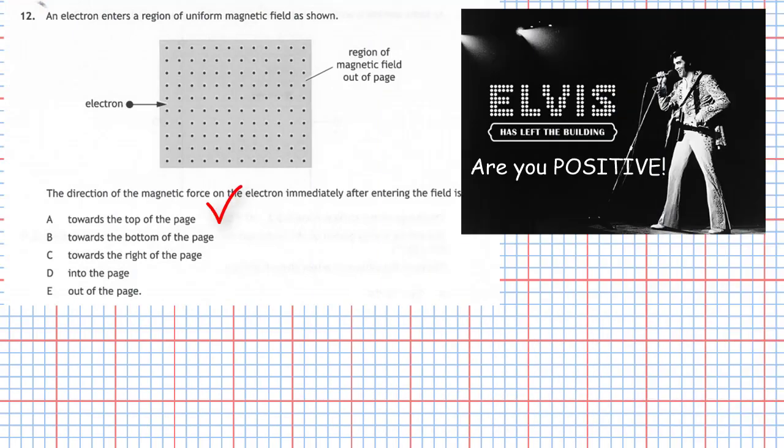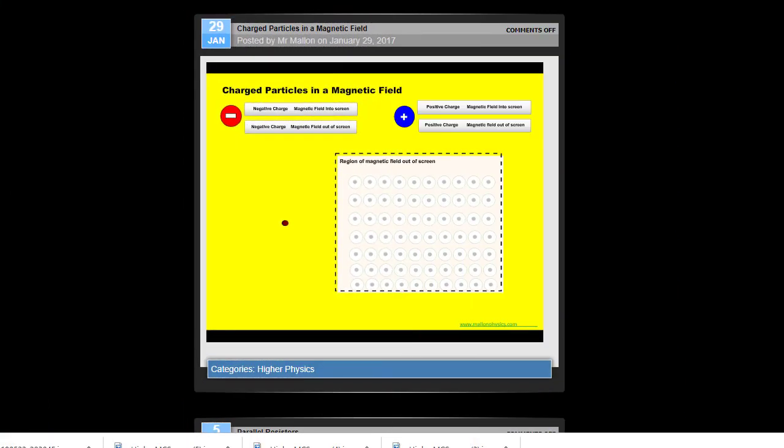Here's the simulation showing you what happens with that negatively charged electron as it enters the region where the magnetic field is out of the screen. As you can see, we pick a negative charge and it will move up towards the top of the page.